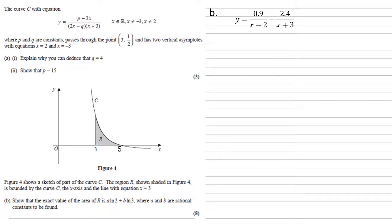So we've got our y in partial fraction form, this is going to be a lot easier to integrate. So we're going to integrate between 3 and 5, 0.9 over x minus 2 minus 2.4 over x plus 3. These two fractions are of the form number over x plus or minus a number, so they just integrate to 0.9 ln x minus 2 minus 2.4 ln x plus 3.